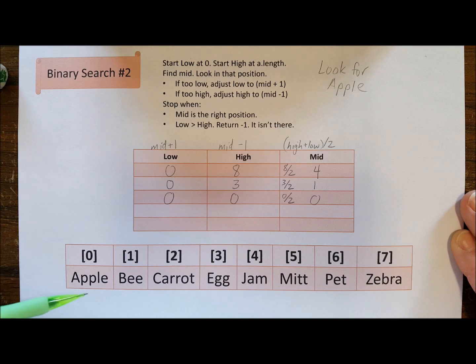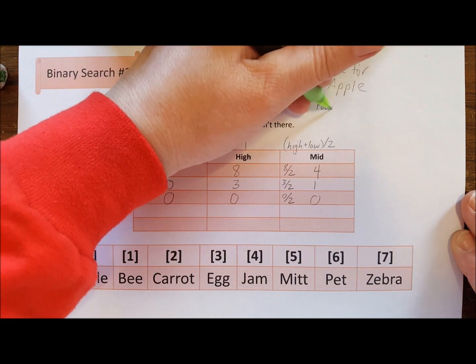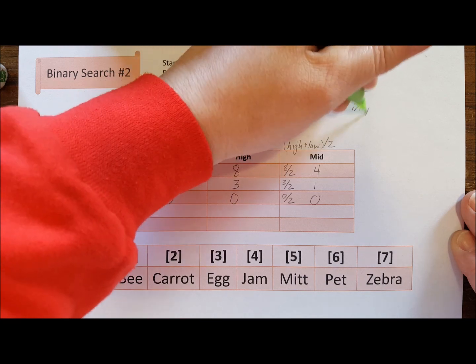So then I'm going to go down and look in zero and there indeed is apple, so we have found it in position zero.